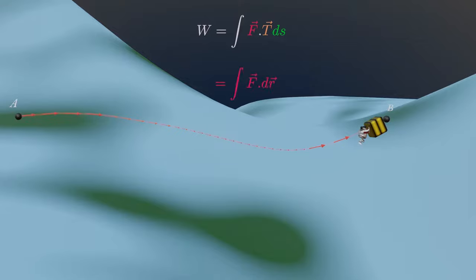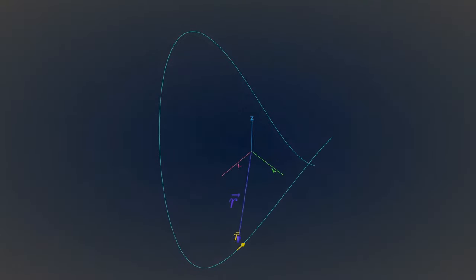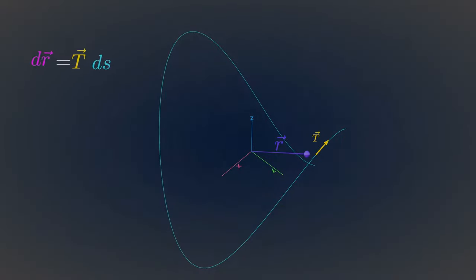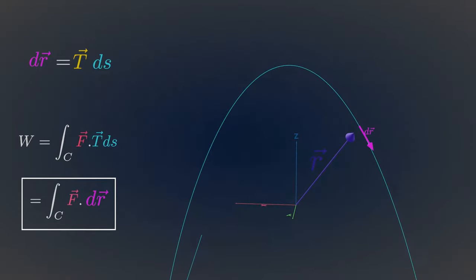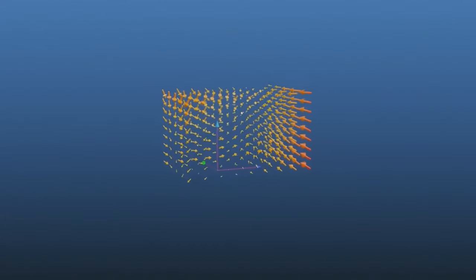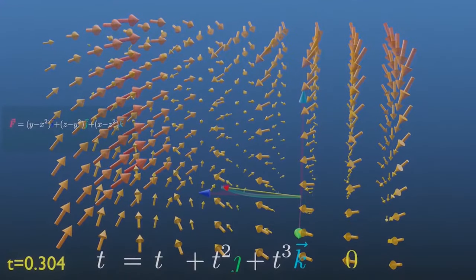It can also be written in a more standard form. As a particle moves along a smooth curve in space, the unit tangent vector turns as the curve bends. Its length remains constant and only its direction changes. The unit tangent vector is given by this expression, which can be simplified further. Therefore, the simple definition of work done can be written in vector differential form. Let's visualize the work done by this force field on moving an object along the curve parameterized by this equation.